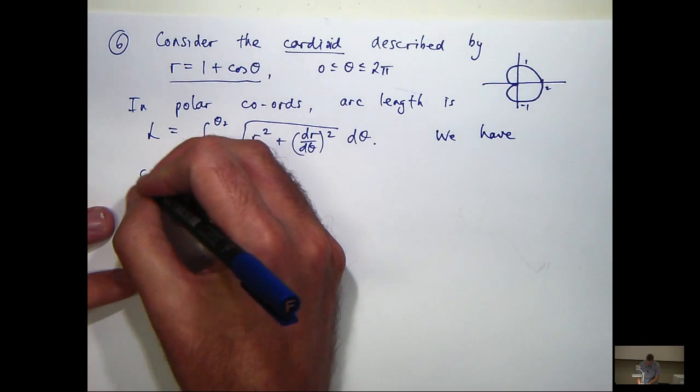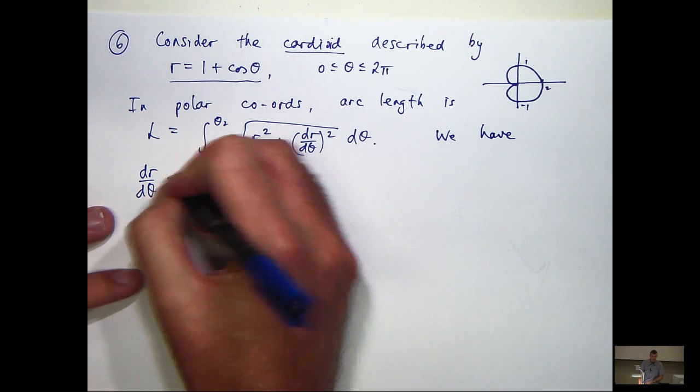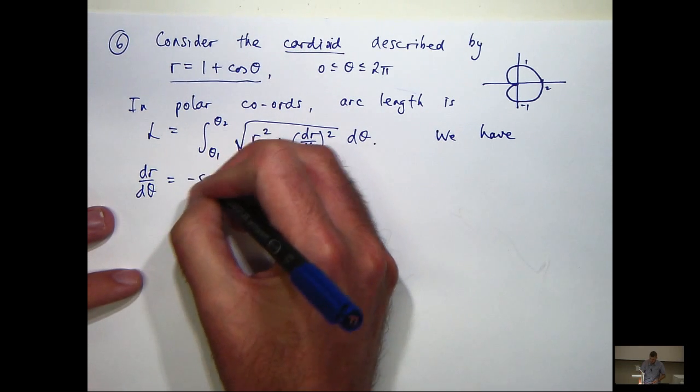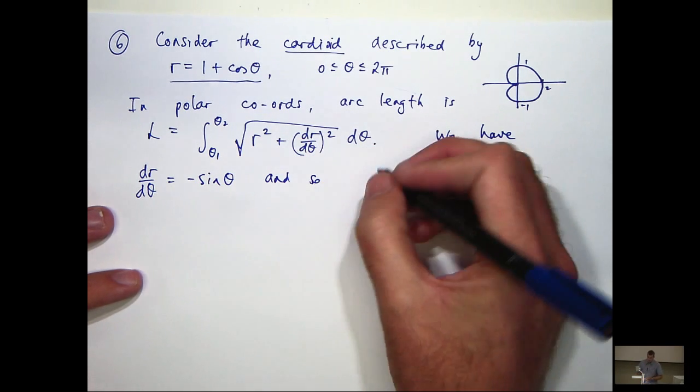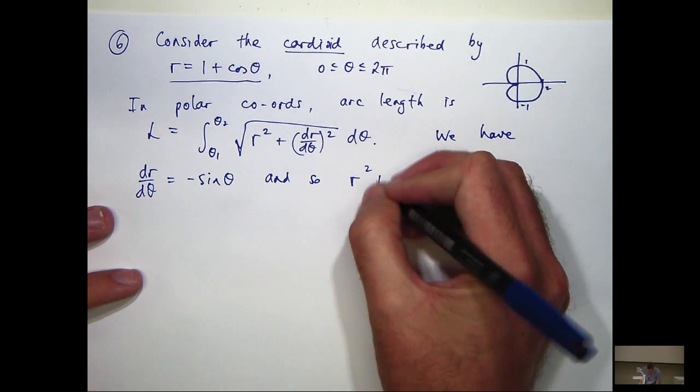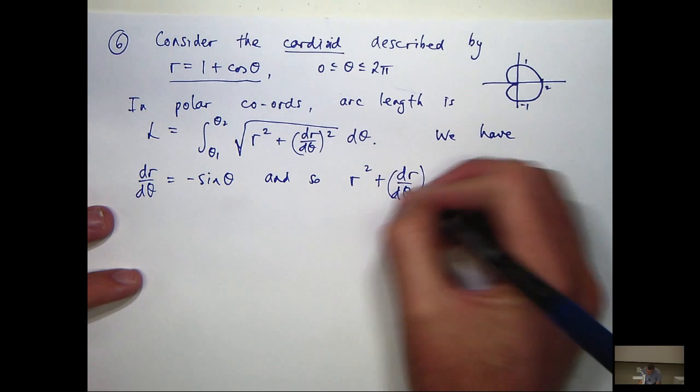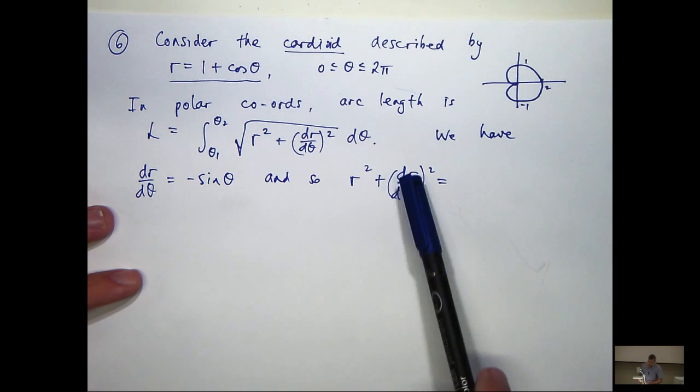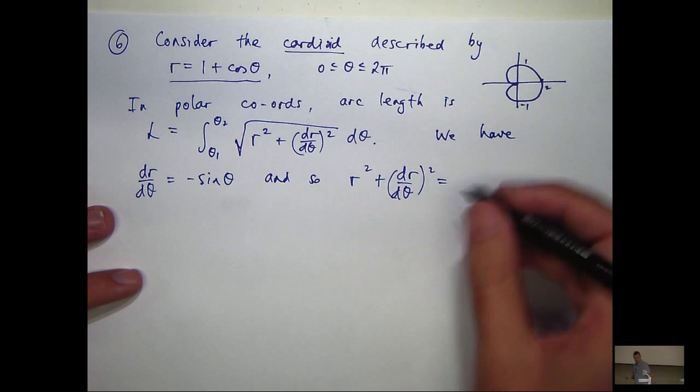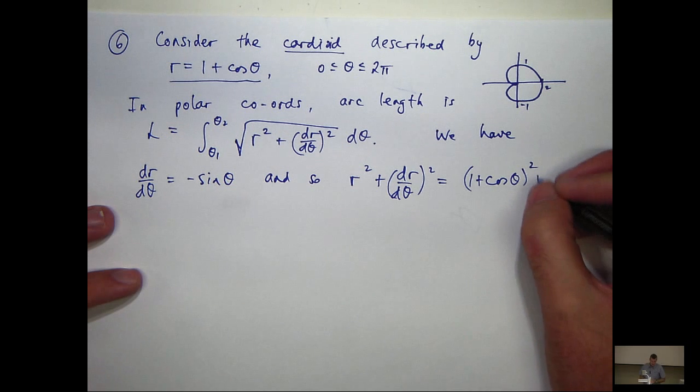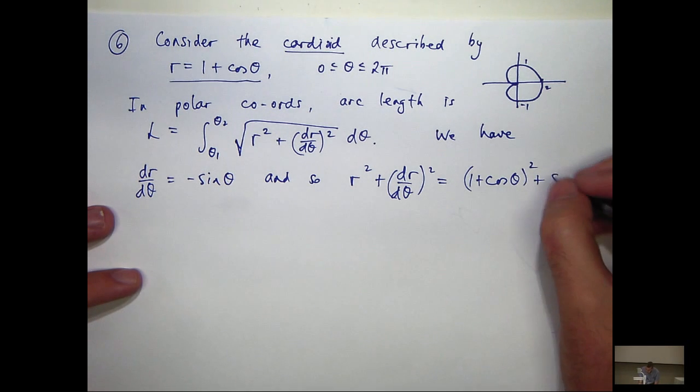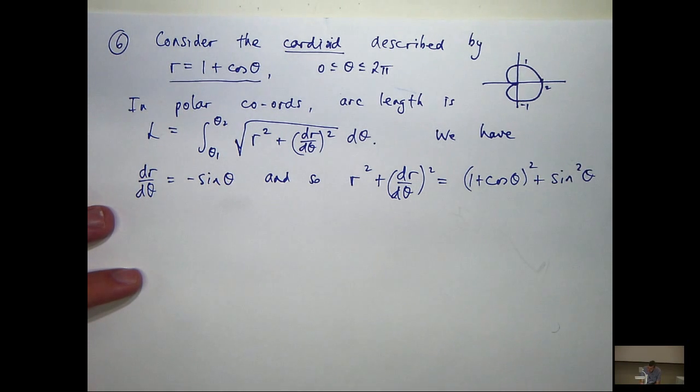So let's calculate the derivative dr/dθ. That's going to be minus sine θ. So r squared plus (dr/dθ) squared: r equals one plus cos θ, so just take that, square it, and this is going to go to sine squared θ.